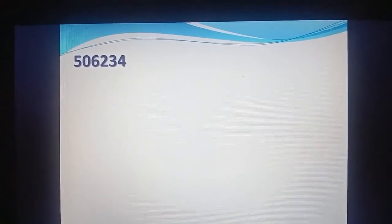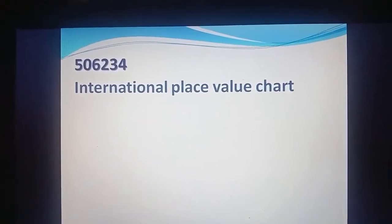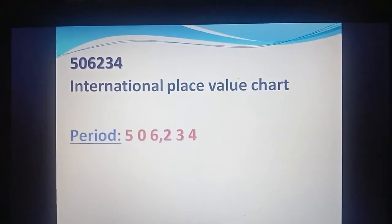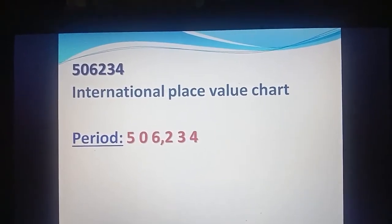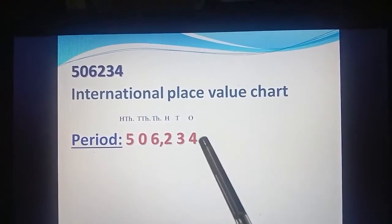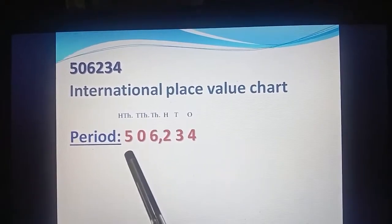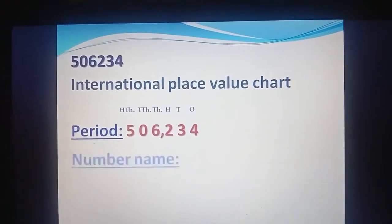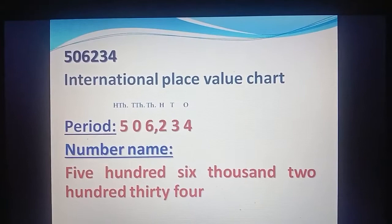Now, same part, that is 506234. We write the number name using the international place value chart, and divide according to its period: 506,234, and assign places — ones, tens, hundred, thousand, ten thousand, hundred thousand. So its number name is five hundred six thousand two hundred thirty-four.